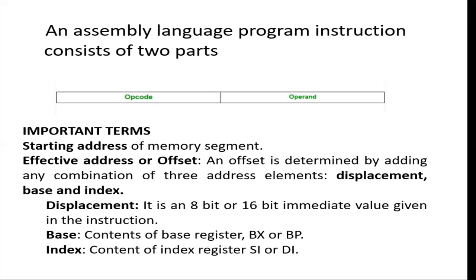Here are some important terms. First is the starting address — this is the starting address of the memory segment. Then we have the effective address, which is the actual and exact address of our operand. Then we have displacement, which is the value by which we increment the program counter according to the given situation. We also have two types of special purpose registers: base and index, denoted as BX/BP and SI/DI respectively. These terms will become clearer when we use them in the addressing modes.